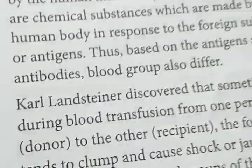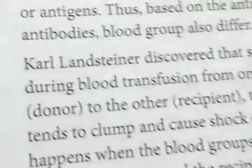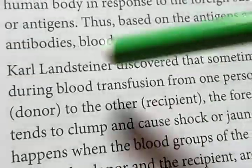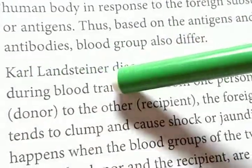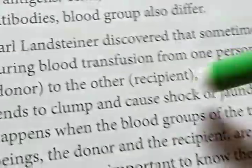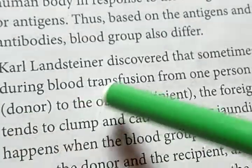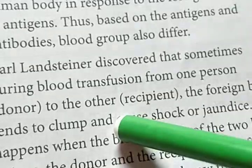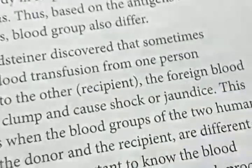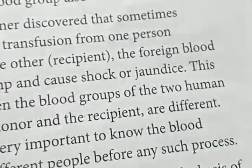Depending upon antigens and antibodies, blood groups differ from each other. Karl Landsteiner discovered that sometimes during blood transfusion from one person to another — the person giving blood is the donor and the one receiving is the recipient — the foreign blood tends to clump and cause shock or jaundice.